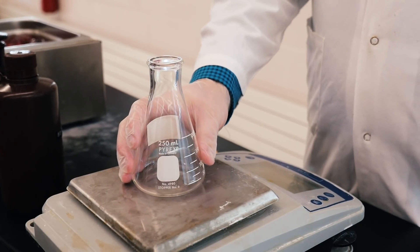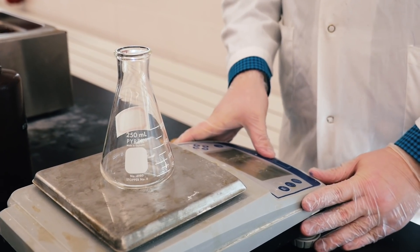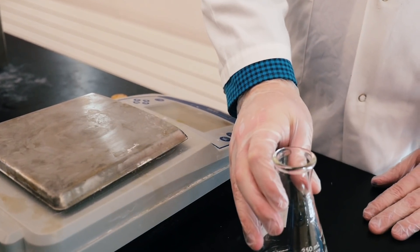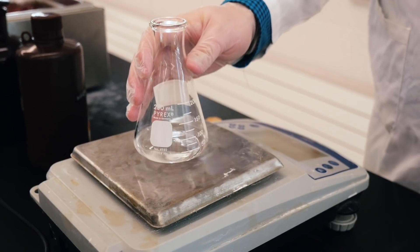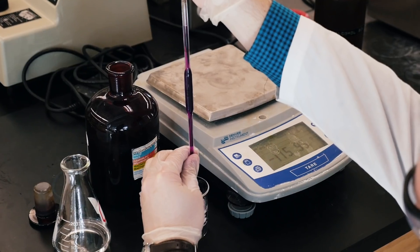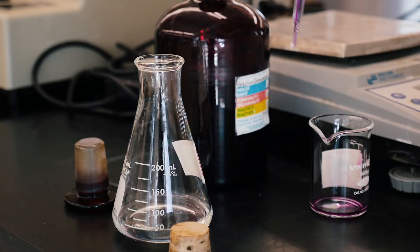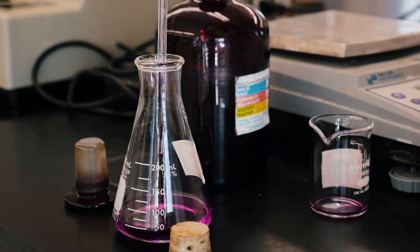To begin, place a 250 mL Erlenmeyer flask on a top loading balance and tare it to zero, then add 45 grams of benzyl alcohol solution and use a 5 mL pipette to add exactly 5 mL of the purple potassium permanganate solution.